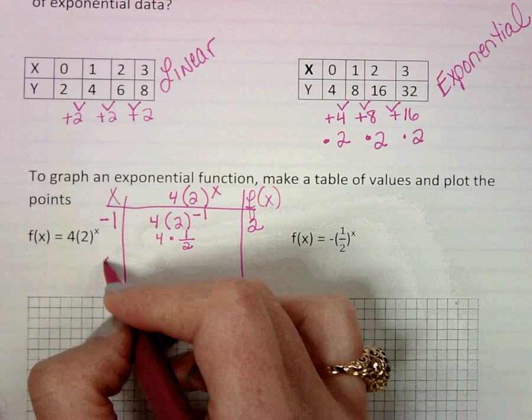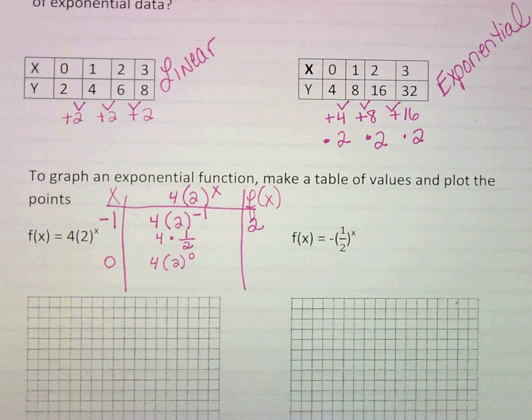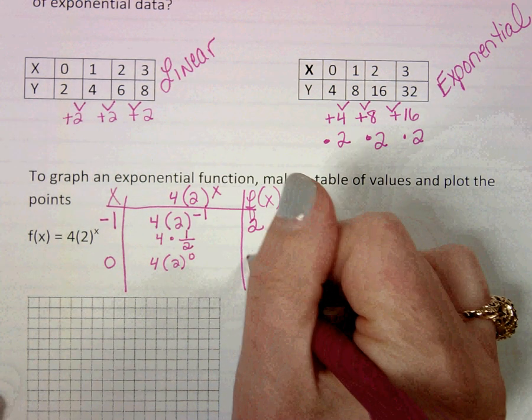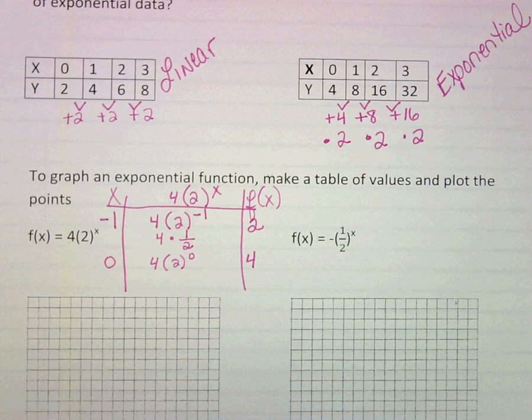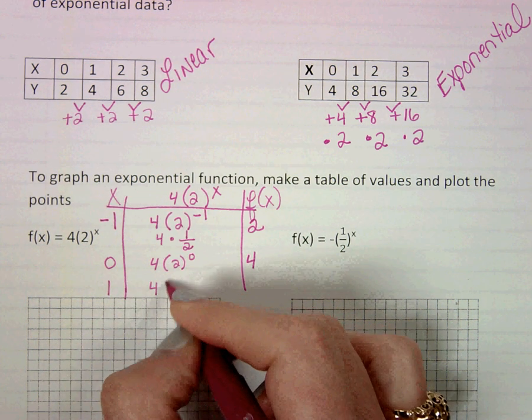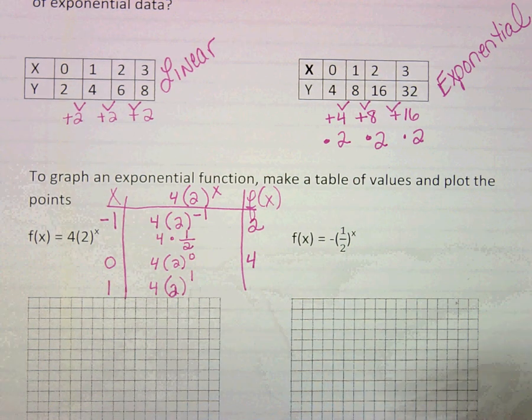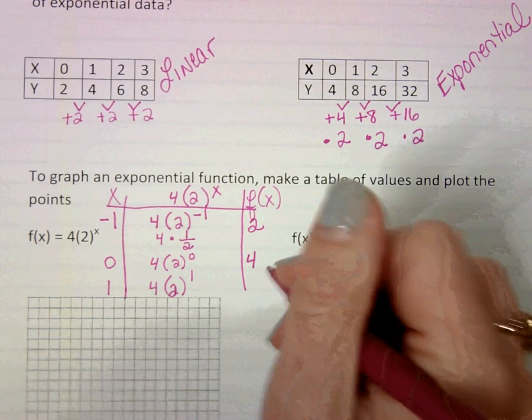I'm going to pick zero. Remember, anything to the zero power is one. So this would simply be four times one, which is four. I'm going to pick an exponent of an x value of one. So that's really easy. Two to the first power is two, and two times four is eight.